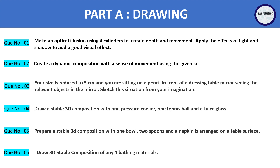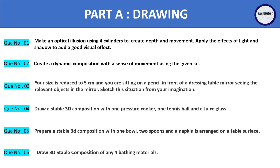Another Part A question asks you to draw a stable 3D composition with one pressure cooker, one tennis ball, and one glass of juice. Try to solve all six questions and do let me know how you are able to make it. If you are seriously solving the questions, please send them to me on my email address so that I can check and let you know your mistakes.